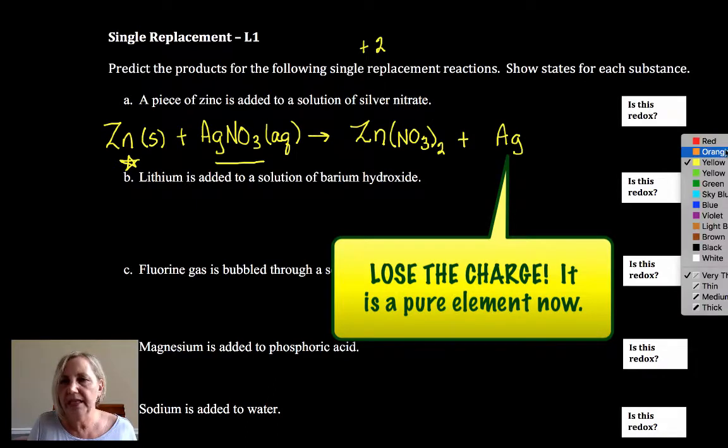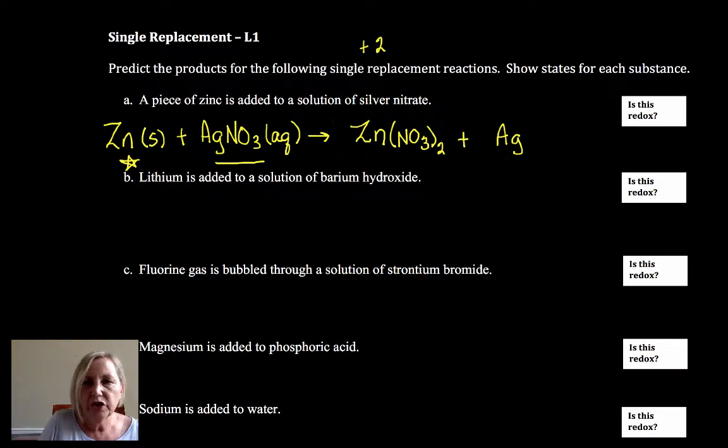Now, I do need to balance this. So I've got two nitrates on the right side, so I need two on the left, and that means I need two silvers. Now, a common question that would be asked is, is this a redox? And the simplest way to do that is say, I have a pure element all by itself. It's zero. In a compound, it's not zero.